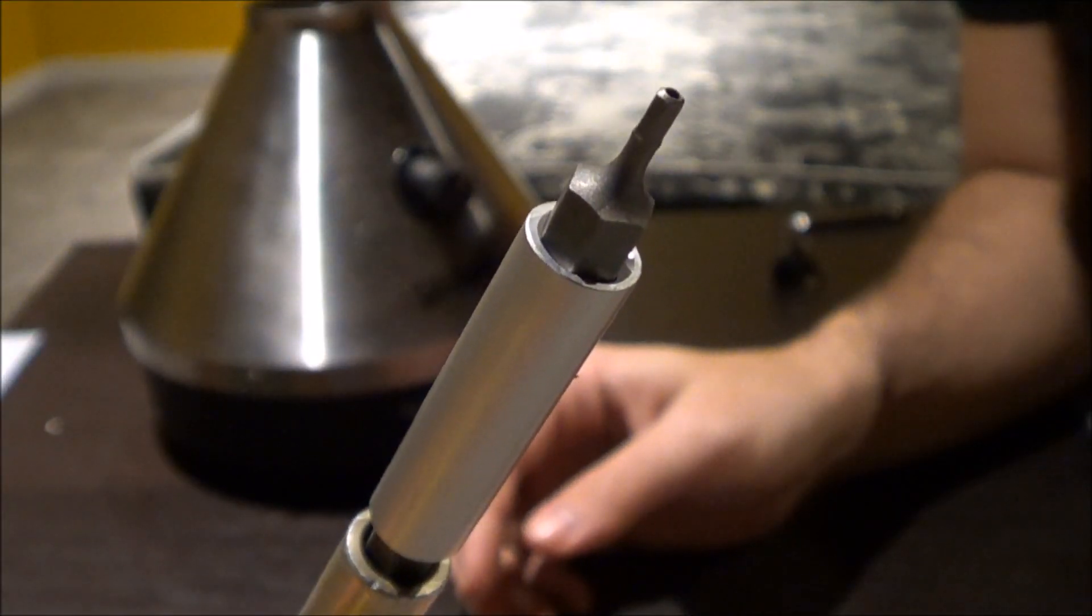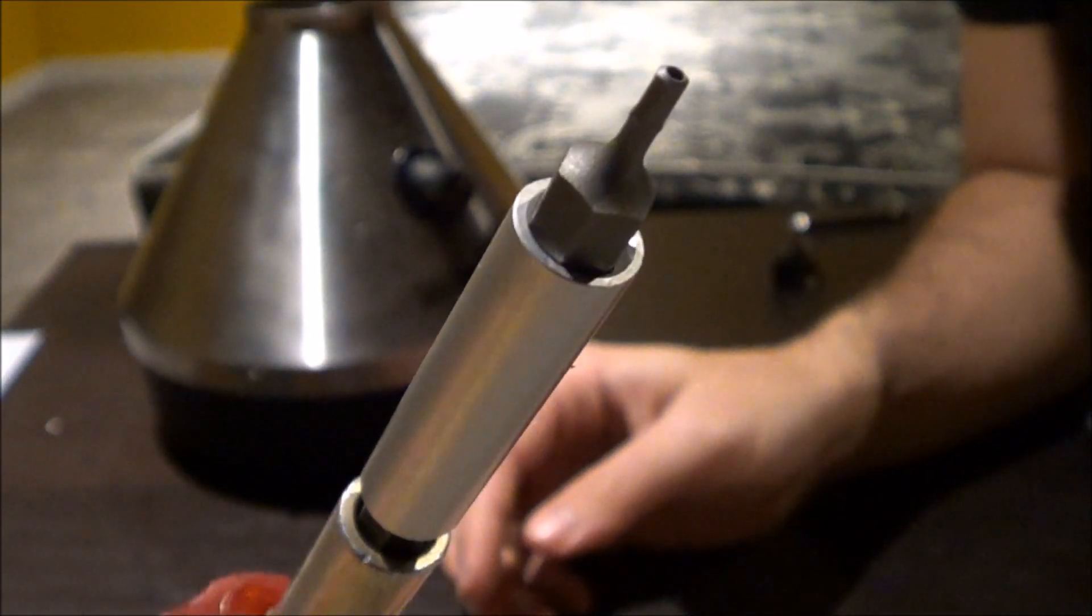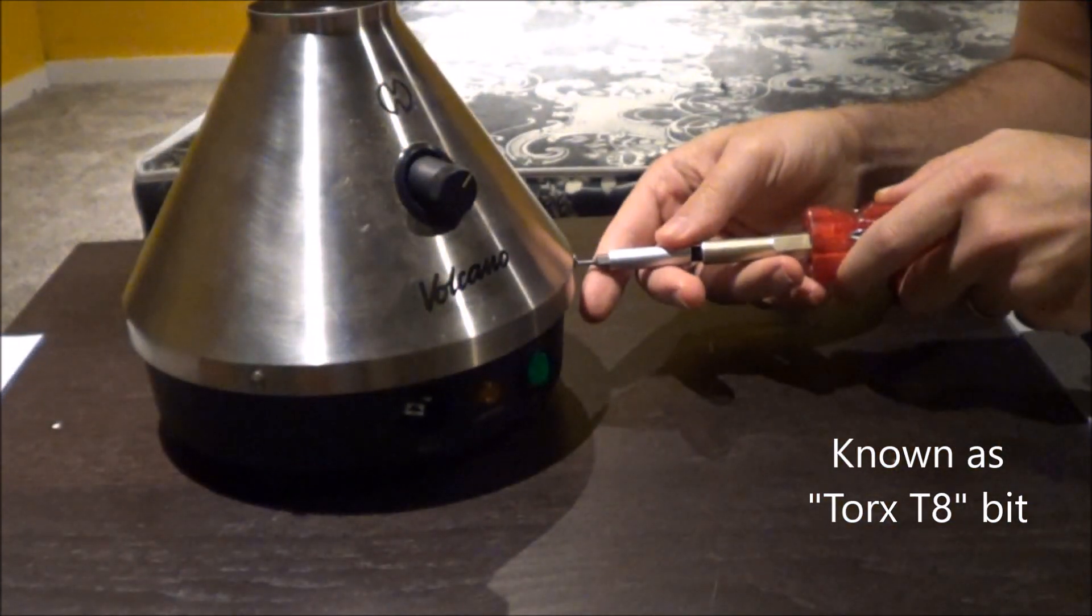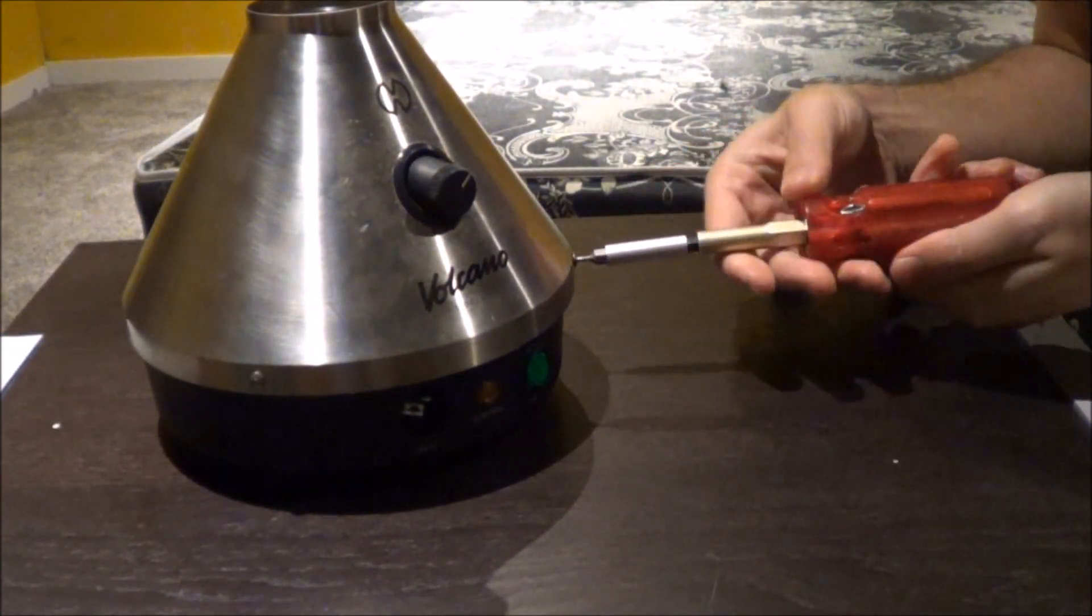So the first thing you've got to do is you take a very specific screwdriver bit that looks like this, and you've got to take off the screws to the sides of the volcano.